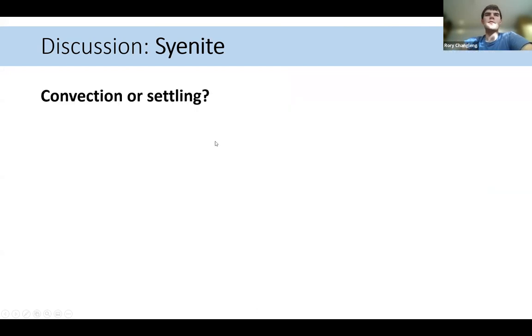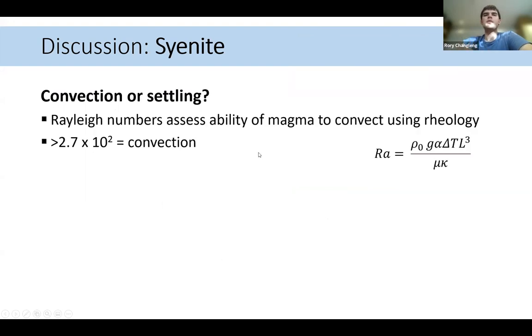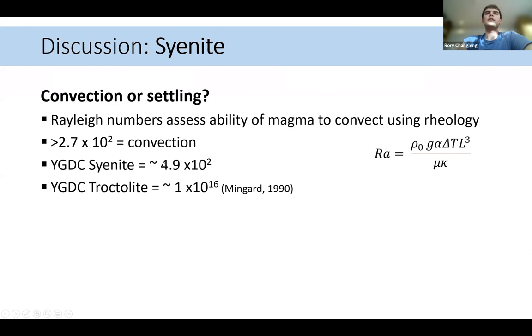And if it's crystallization, if it's settling or convection, if you look at the Rayleigh numbers, which is just a way to try and assess whether the magma could have been convecting. And this is the key threshold to look at, then this is just above that threshold for the syenite. So it's likely to be convecting, but in a sort of sluggish manner, certainly compared to the troctolite, where it's very much above that number. And so it's likely to be vigorously convecting.